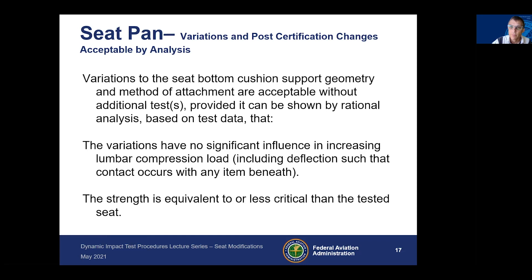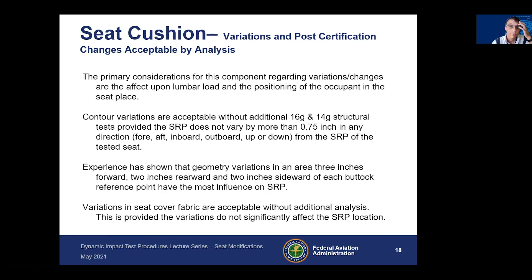Other changes can be shown acceptable if rational analysis demonstrates the variations have no significant influence on increasing lumbar compression loads. This includes looking at deflection underneath the pan so that no contact occurs with items beneath it. For example, if your initial certification test had an IFE box below the seat and you're expecting increased deflection, you must assess that this does not cause contact with that item and increase lumbar loads.